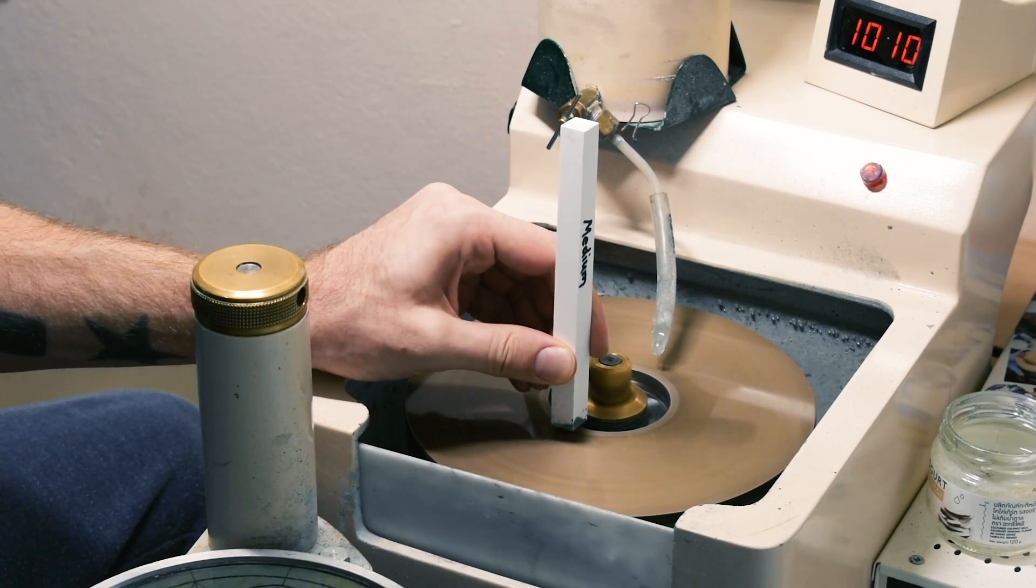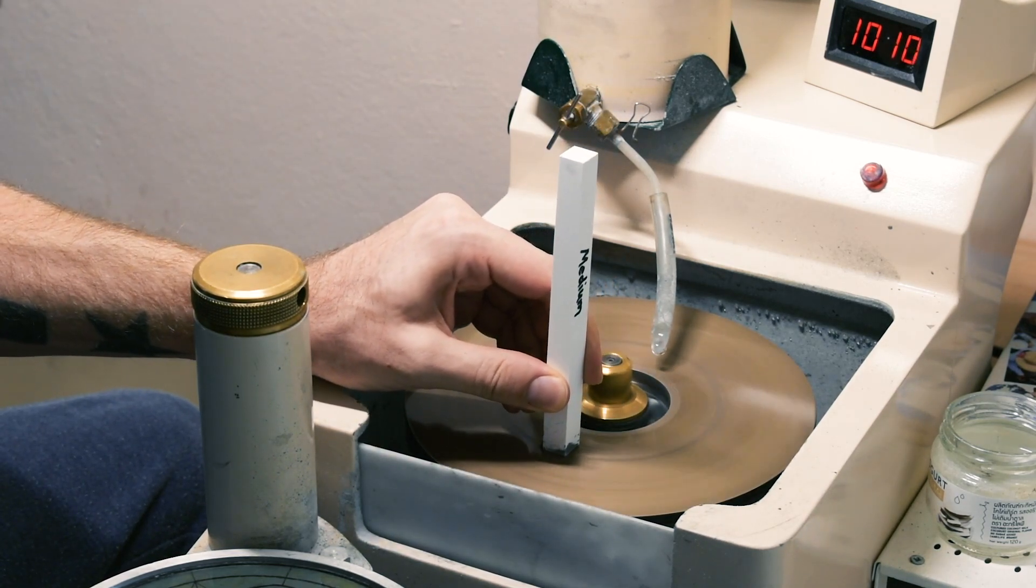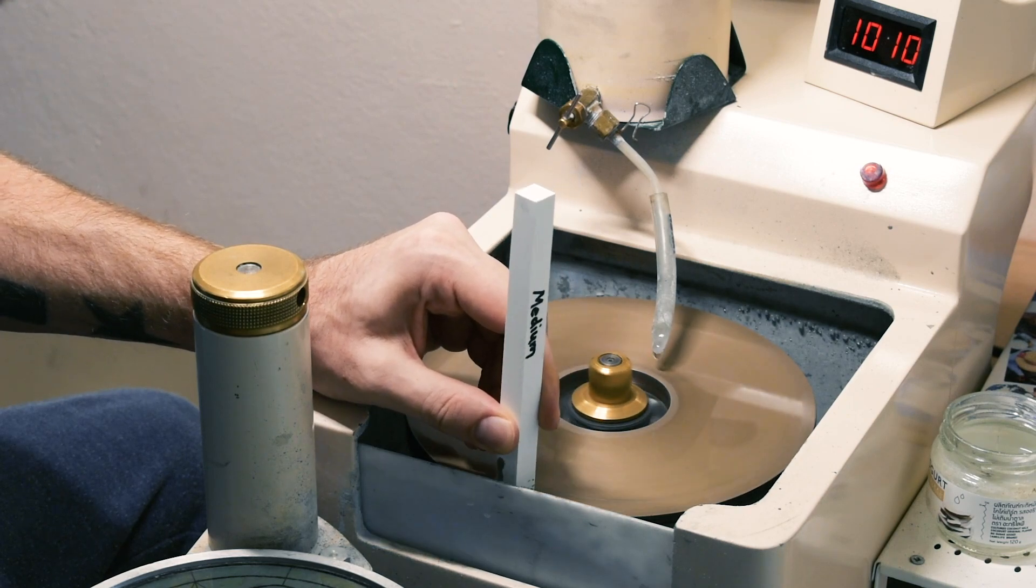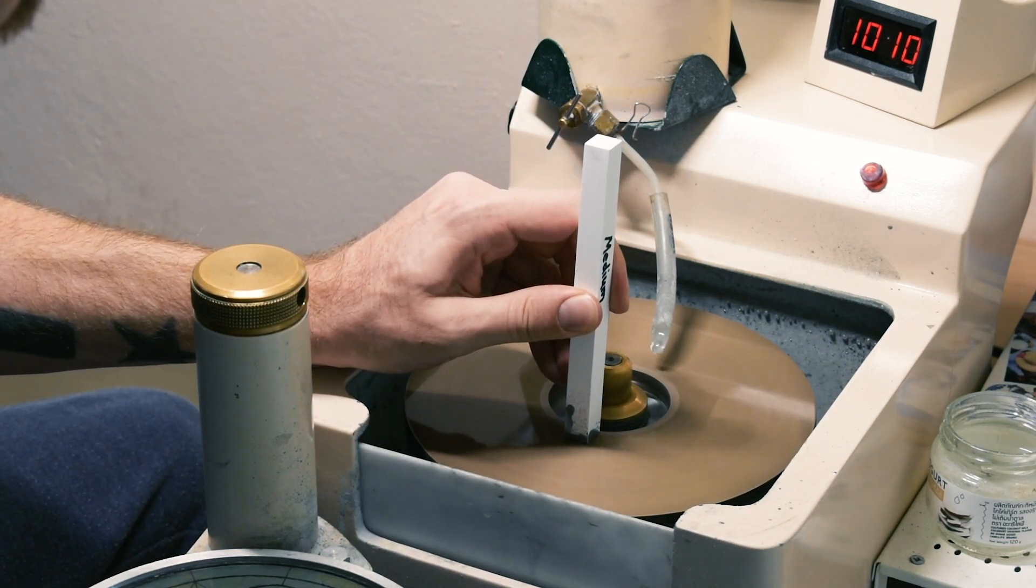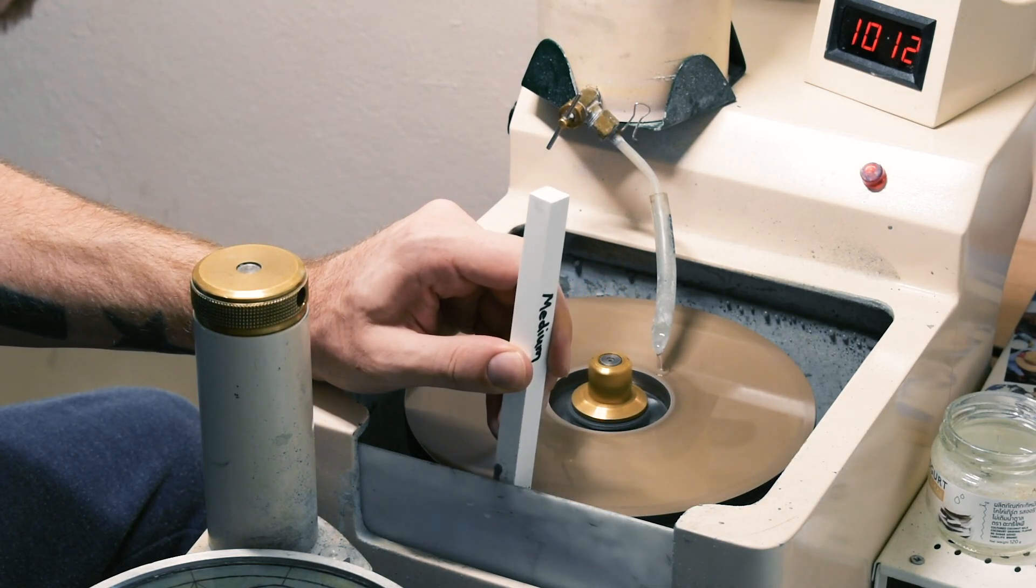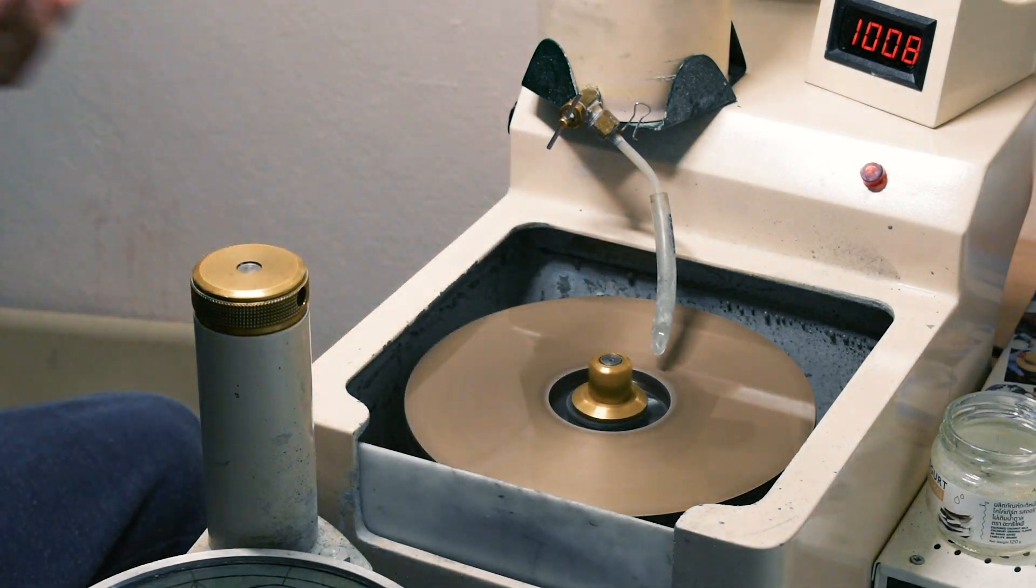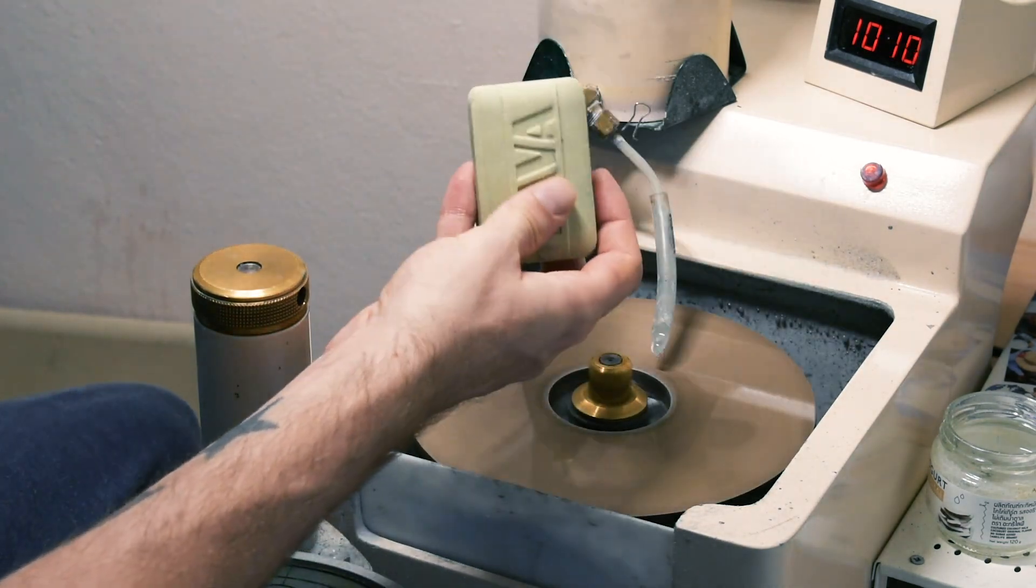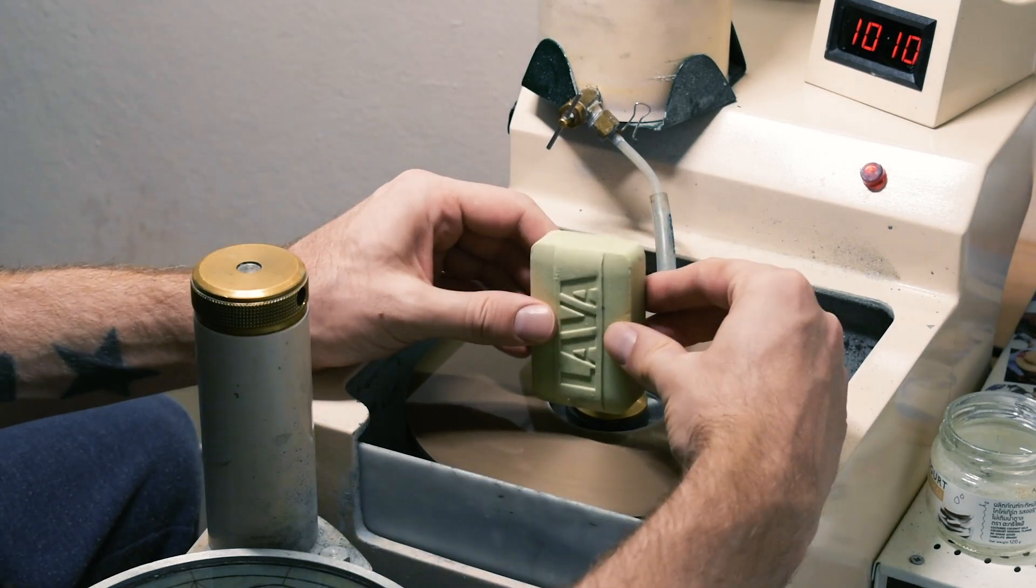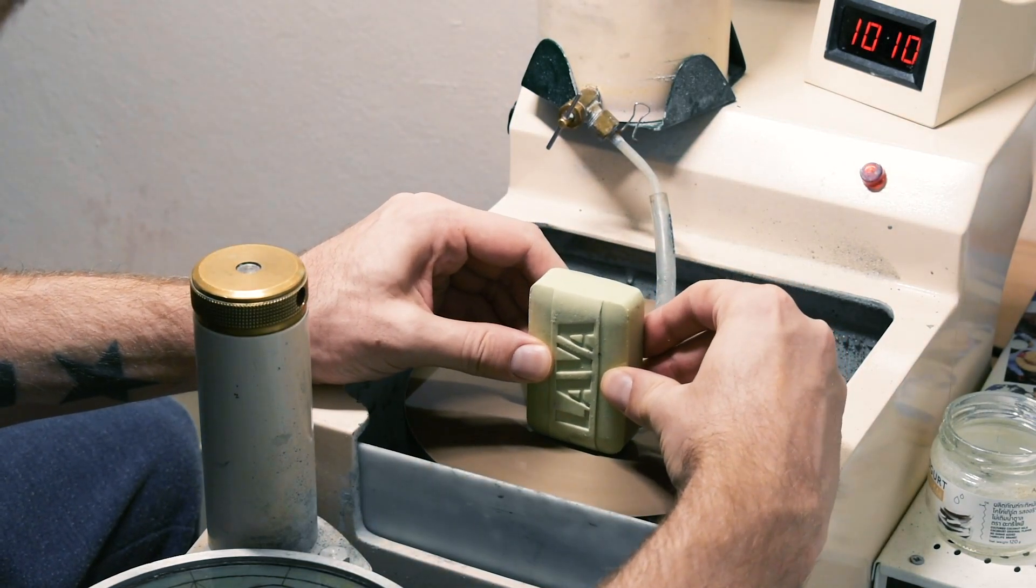I'm going to do three passes from inside to outside using the end of the dressing stick. And then I'm going to use the lava soap, again three times from inside to outside.